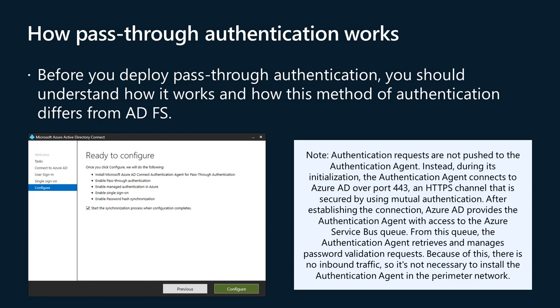Passthrough Authentication is not just a simpler form of ADFS authentication. Both methods use the on-premises infrastructure to authenticate users when accessing resources such as Microsoft 365, but not in the same way. Passthrough Authentication uses a component called Authentication Agent to authenticate users. Azure AD Connect installs the Authentication Agent during configuration. After installation, the Authentication Agent registers itself in your Microsoft 365 tenant's Azure AD and is assigned a unique digital identity certificate, enabling secure communication. The Authentication Agent connects to Azure AD over port 443 — an HTTPS channel secured by mutual authentication — and retrieves password validation requests from an Azure service bus queue. Because of this, there is no inbound traffic, so it's not necessary to install the Authentication Agent in the perimeter network.